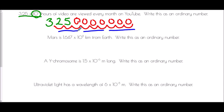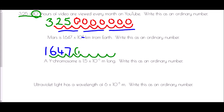Mars is 1.647 × 10⁸ kilometers from Earth — write this as an ordinary number. Starting with the digits 1647, the power is positive eight, so we move the decimal point eight places to the right: 1, 2, 3, 4, 5, 6, 7, 8. Adding placeholder zeros gives 164,700,000 kilometers — one hundred and sixty-four million seven hundred thousand.